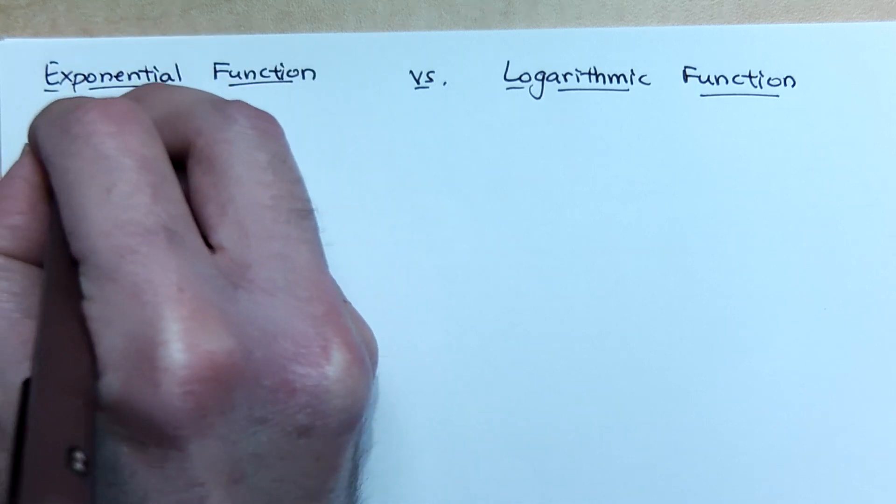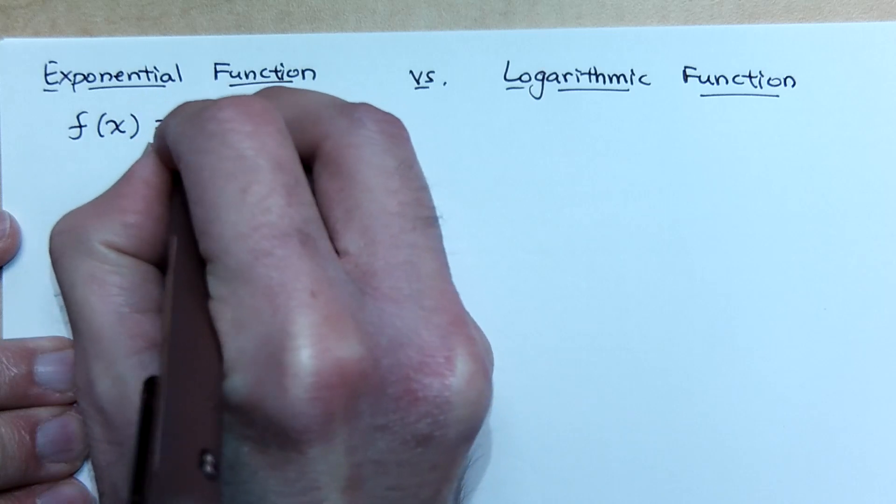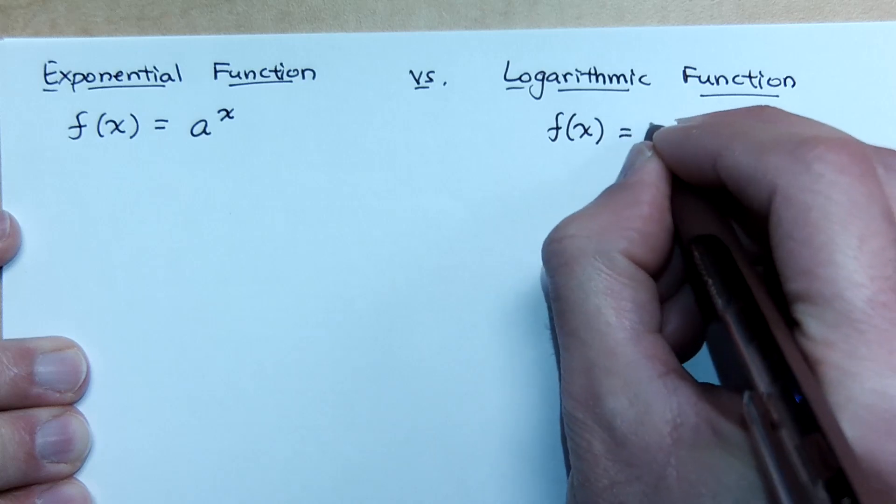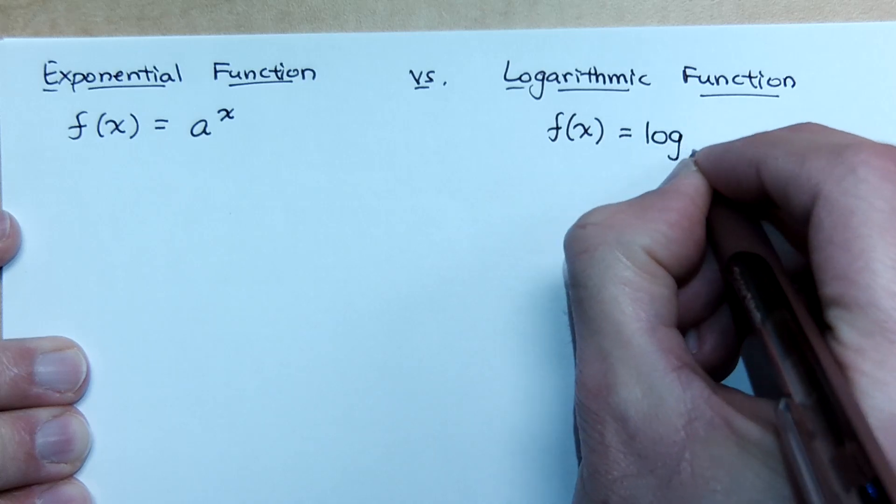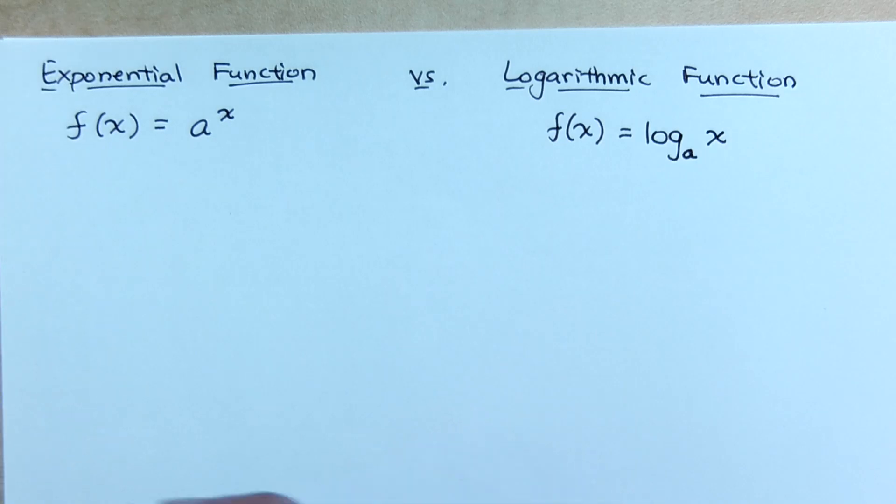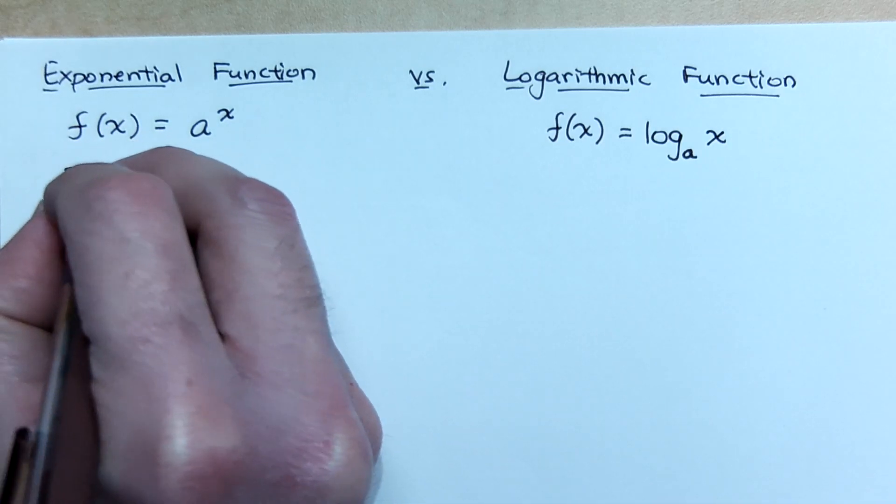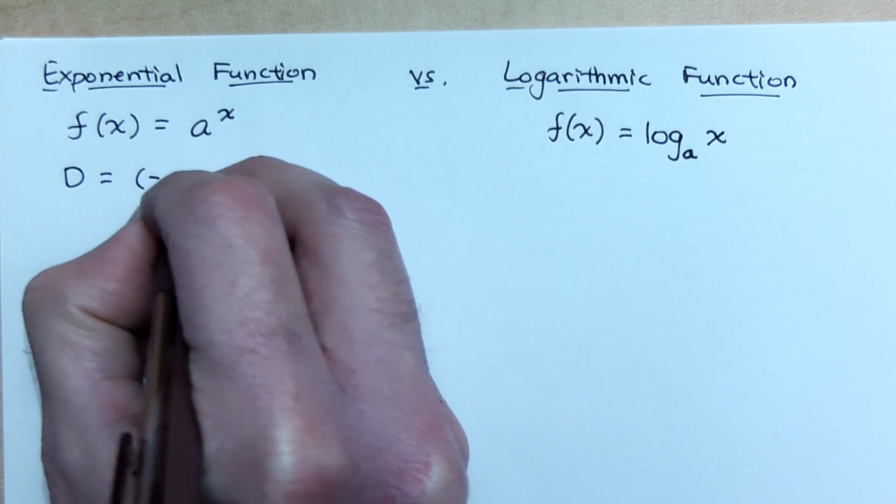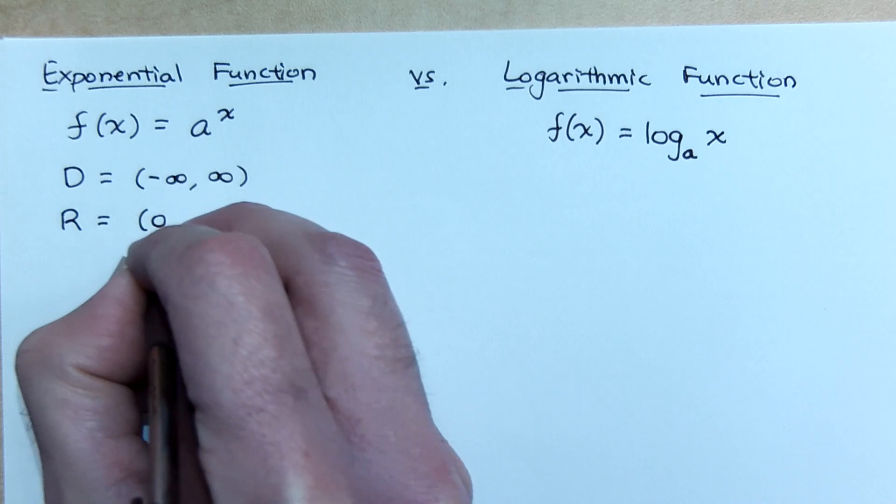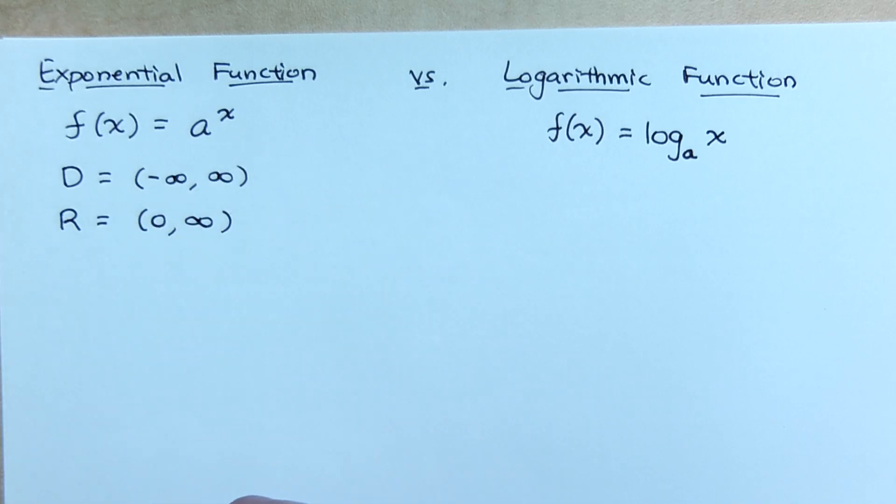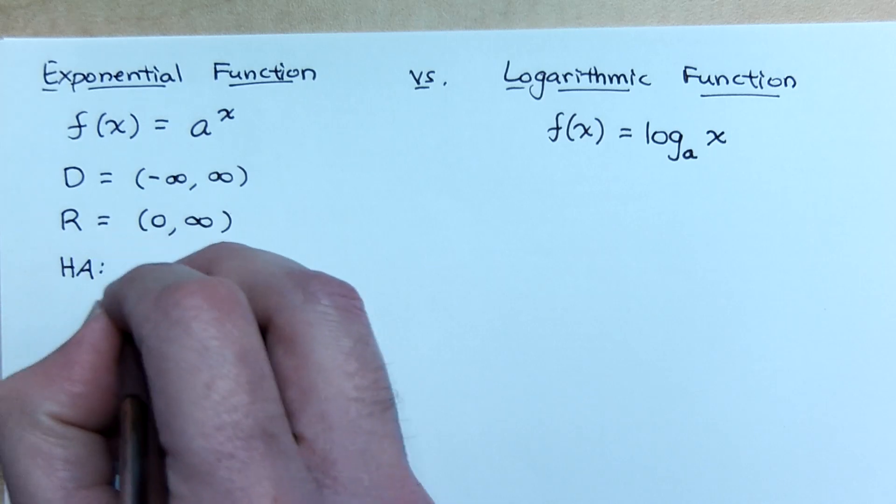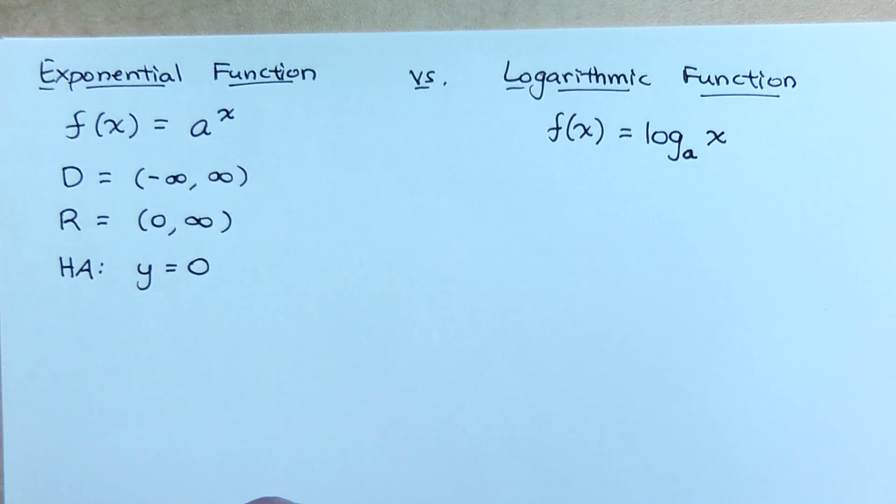So for your exponential function, f of x is a to the x. We've already talked about how the inverse is the logarithm. So we say log base a of x. For our exponential, our domain was all real numbers. Our range was zero to infinity. We had a horizontal asymptote of y equals zero.